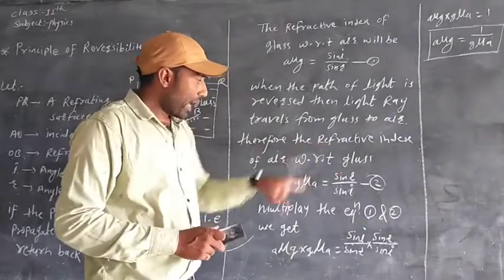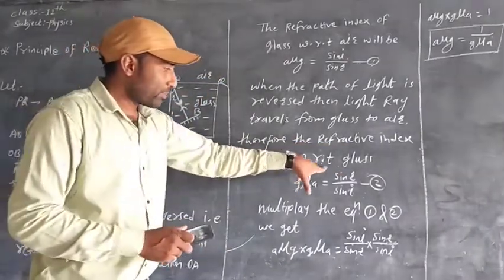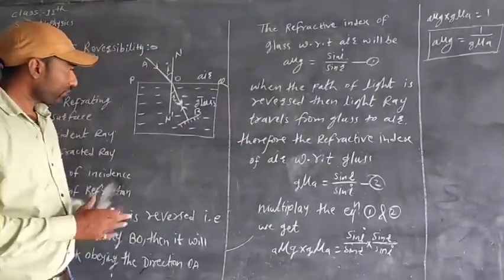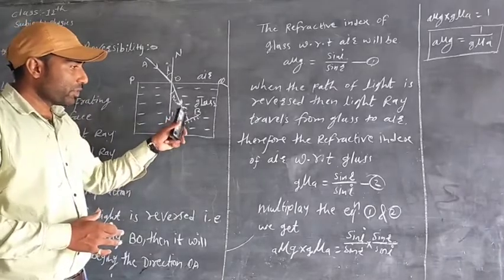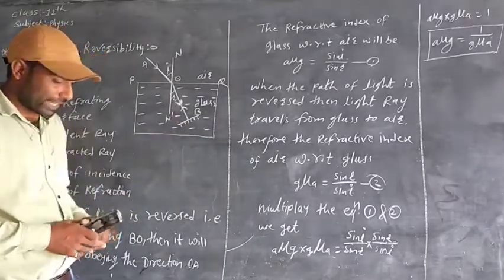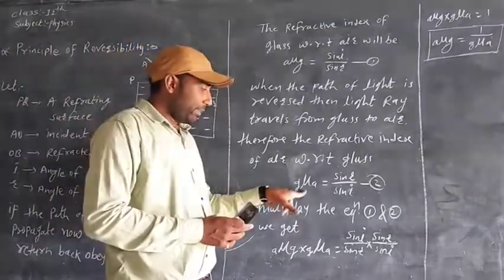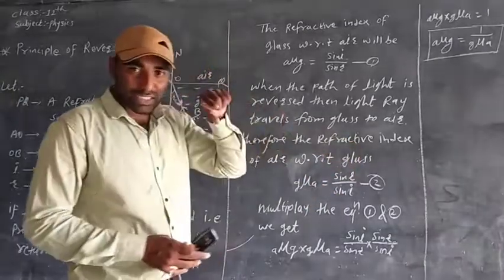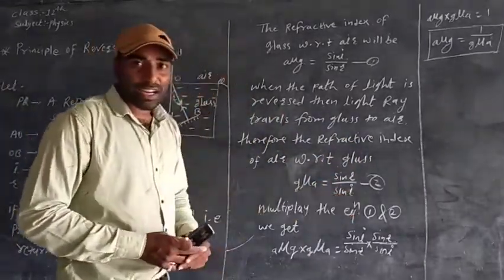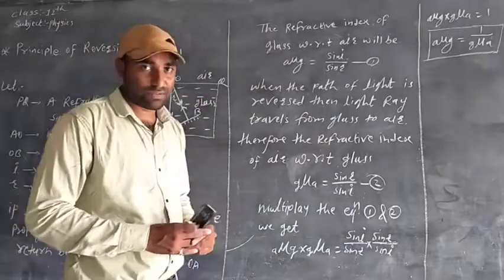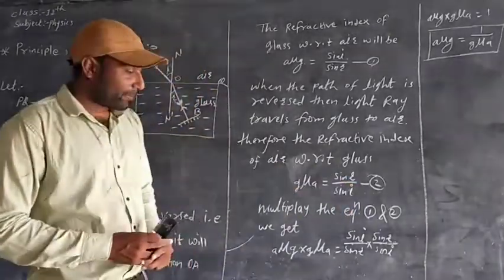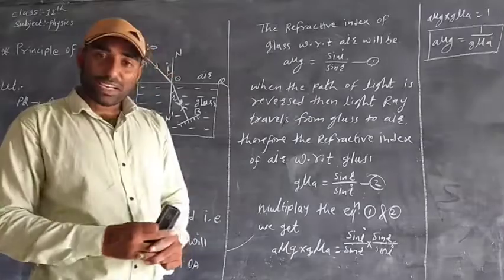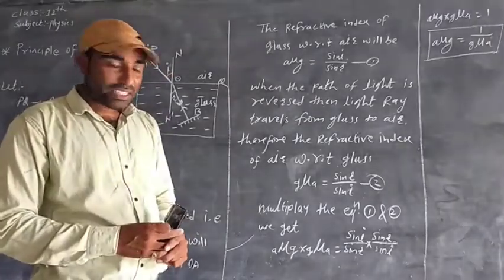Therefore, the refractive index of air with respect to glass, G mu A, is equal to sine R over sine I. This is equation number two. Now multiply equation number one and equation number two.